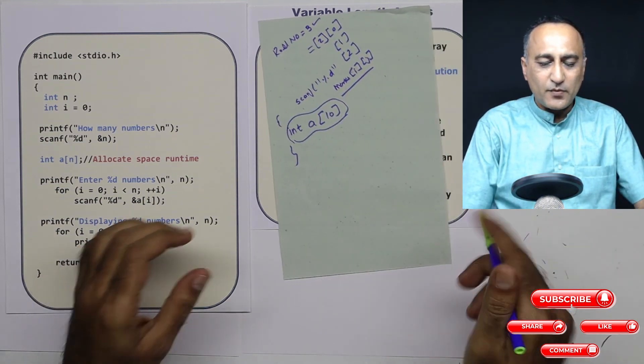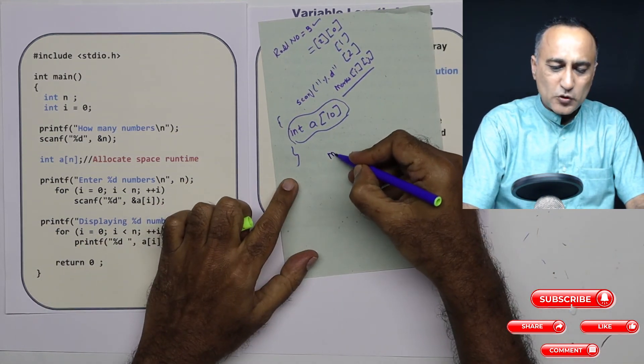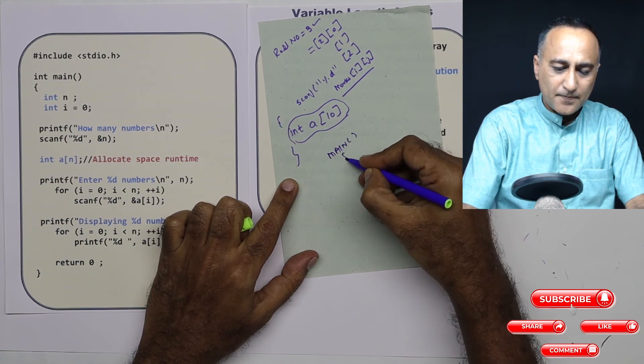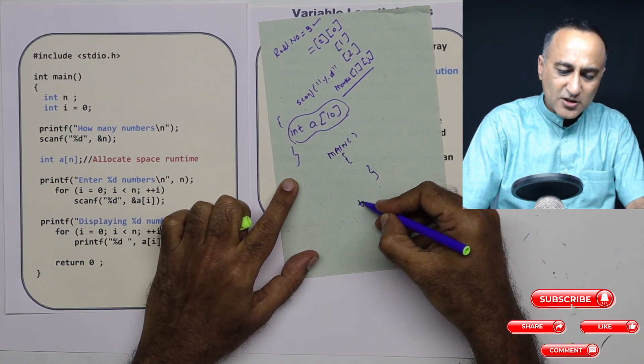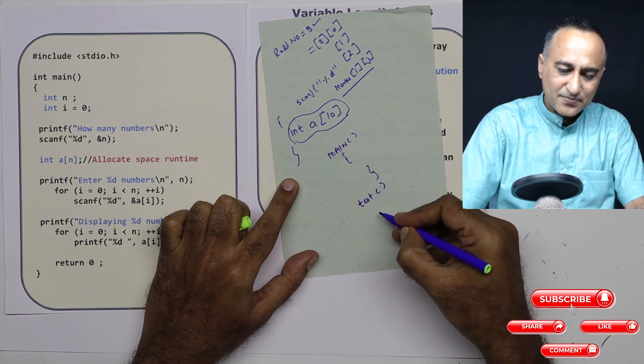A useful time when you can create variable length arrays is suppose you have a function called main here. And here you have another function, let's call it as test.